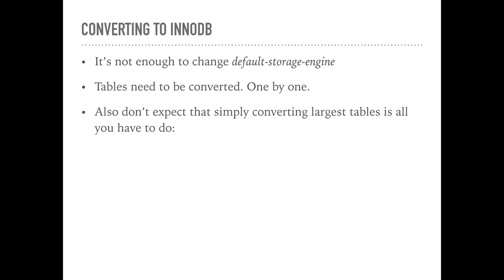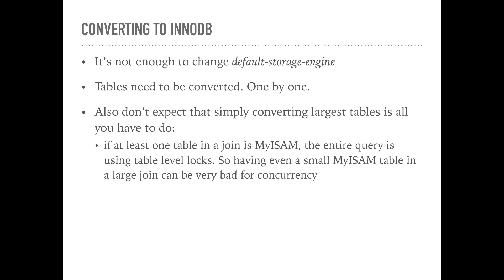Before you go and convert just the big ones to InnoDB, here's something really important. Sometimes as part of migration to InnoDB, DBAs start with the large MyISAM tables to see if things will get better. Sometimes it helps, but in many cases it doesn't. If at least one table in a join is MyISAM, the entire query is using table level locks. So having even a small MyISAM table in a large join can be very bad for concurrency. When you're ready to convert, make sure to convert all MyISAM tables to InnoDB, not just the big ones.